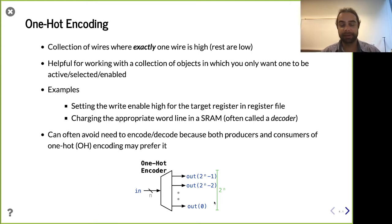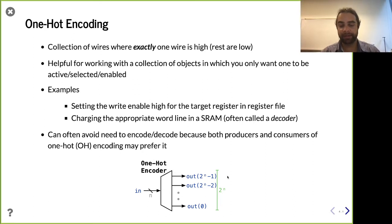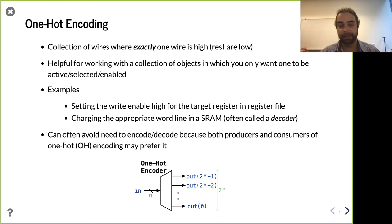An example is a processor register file with 32 registers, where an instruction writes back data to only one of those 32 registers. You'd have 31 registers not changing their value, and you want the write-enable signal on for exactly one of them — potentially zero if no instruction is writing back. A one-hot encoding is a graceful way to do this. The alternative would be to pass around a dense binary index, and everywhere it needs to act, it would need its own comparator asking 'is this 2? Is this 3?' — which is very inefficient. Using an encoder does that conversion for us, and sometimes you can naturally generate one-hot signals and pass them along through multiple stages without explicitly encoding or decoding.